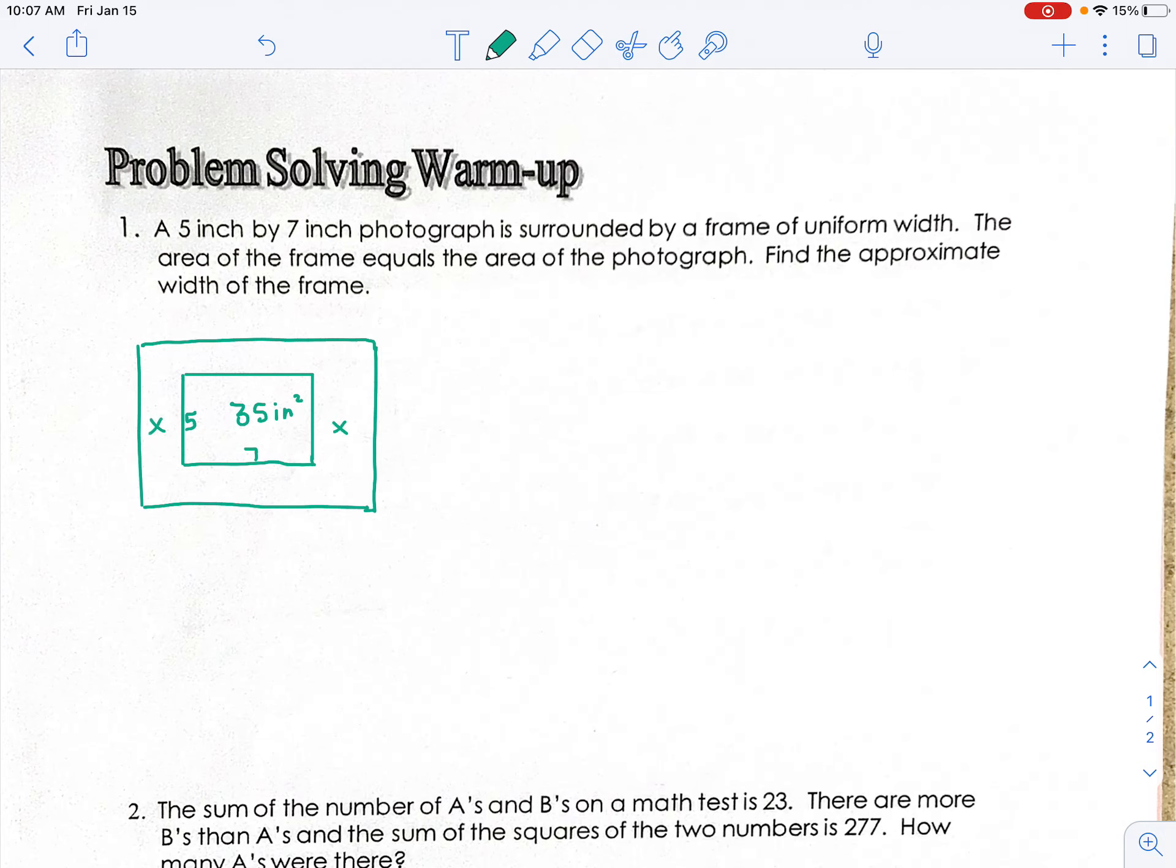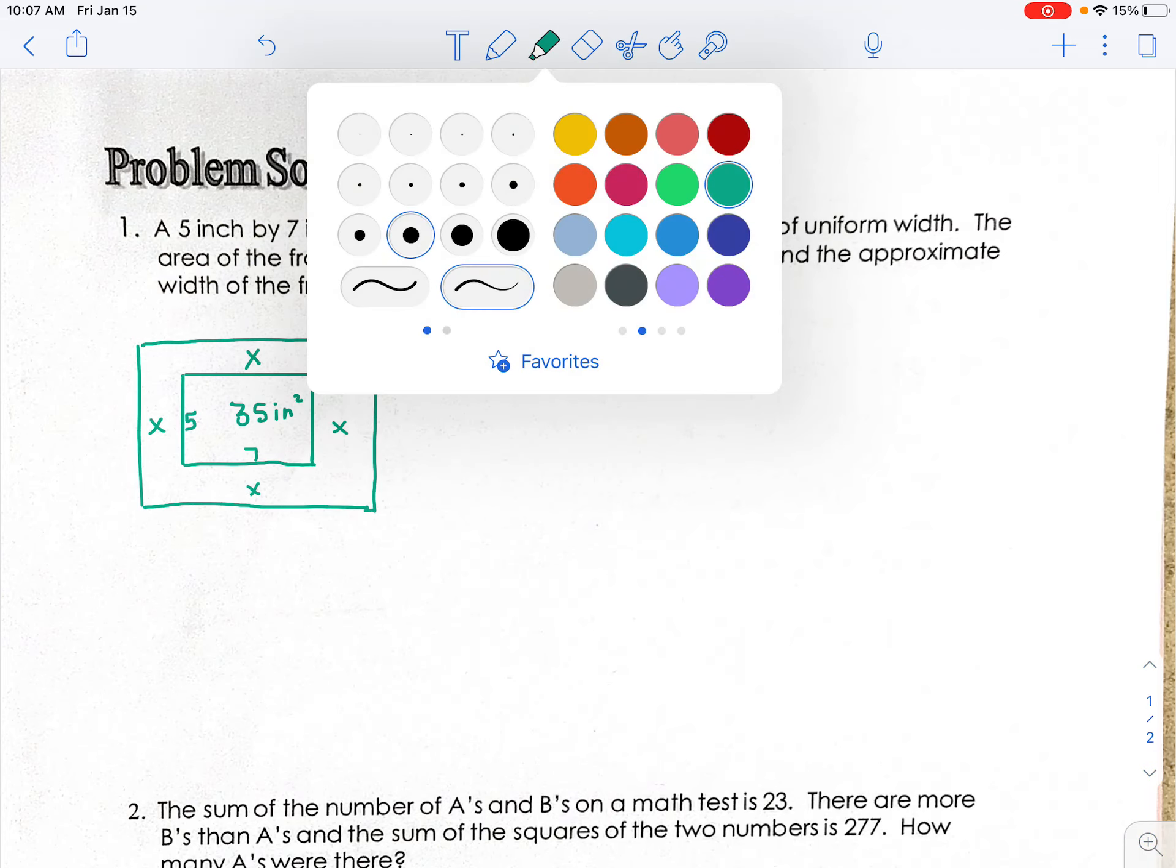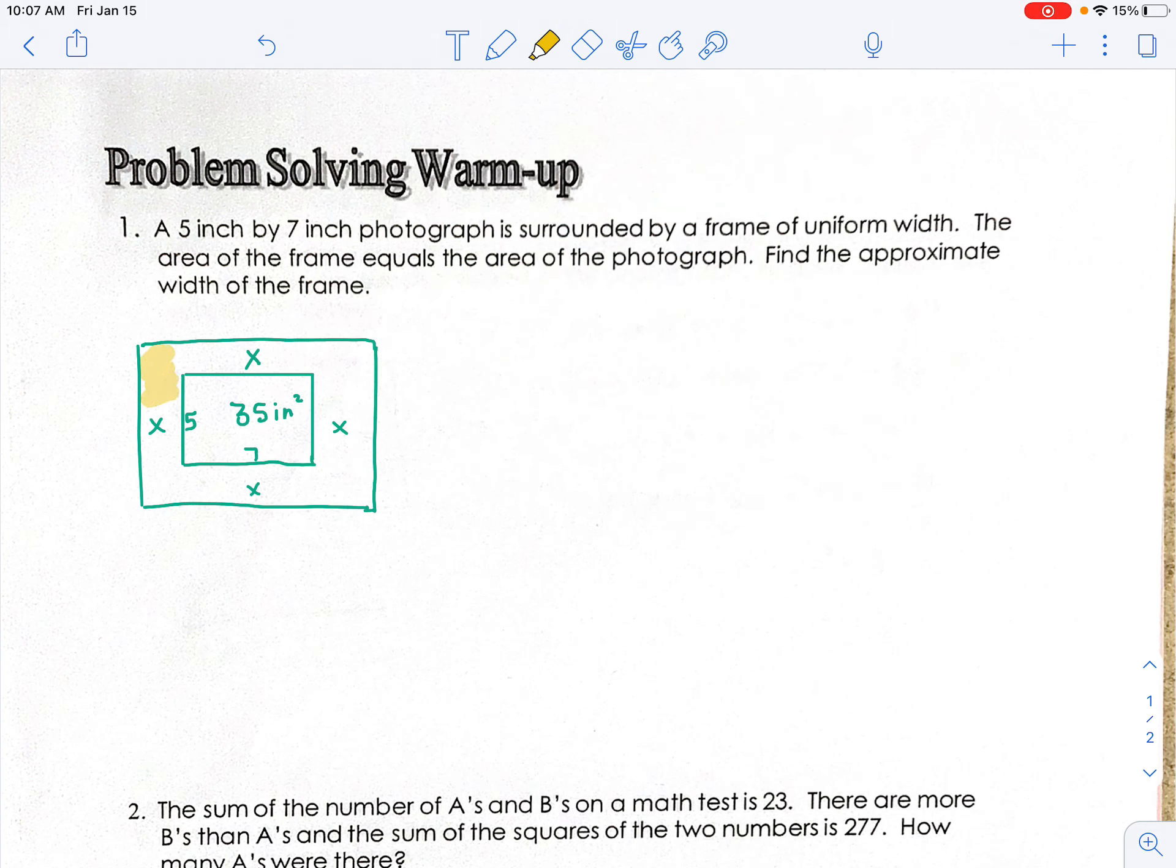Now, we don't know what that width is, but we know it's the same on either side. So it's going to be x and x, x and x. All right, so they tell us that the area of the frame, and what they're talking about by area of the frame, they're talking about this.